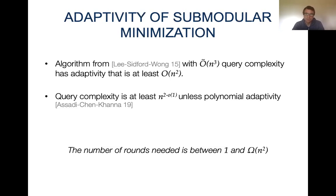In conclusion, for submodular minimization in the general setting where we allow polynomially many queries per round, all that is known about the number of rounds needed for the parallel runtime is that it is somewhere between 1 and n-squared.